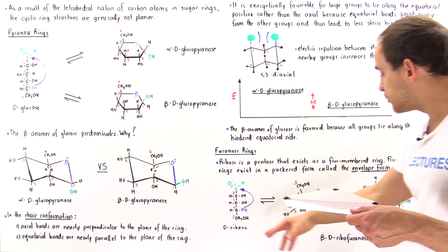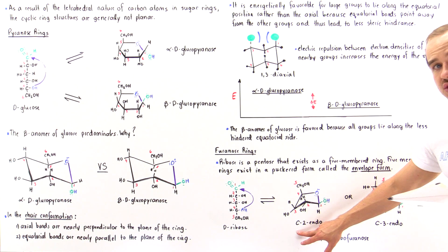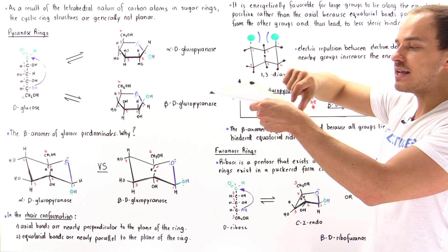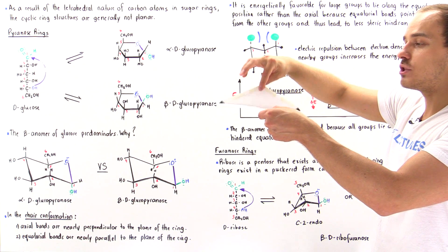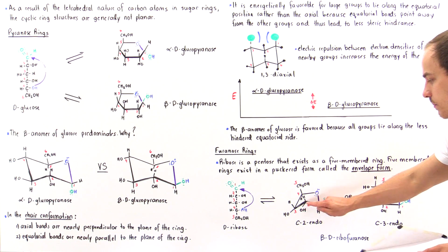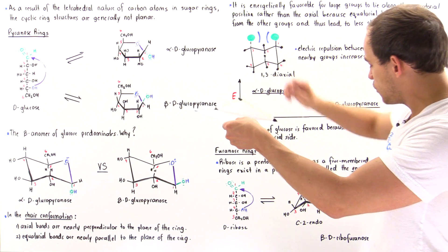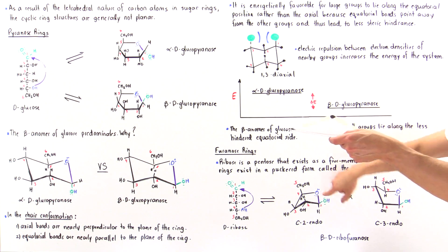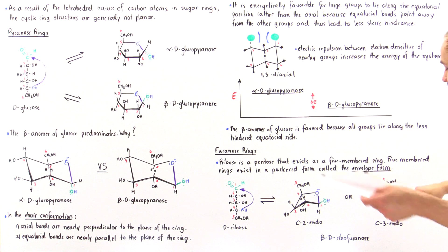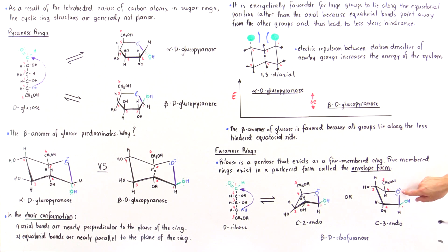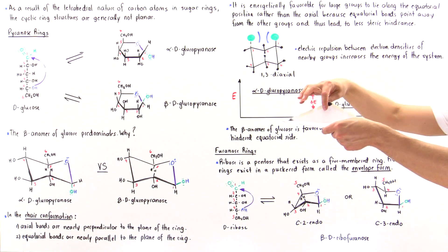There are two types of conformations: C2-endo and C3-endo. In the C2-endo, it is the second carbon that is puckered — carbon number two is out of the plane, while carbon number one, three, four, and the oxygen all lie along the same plane. In the C3-endo conformation, the third carbon is puckered — carbon number one, two, four, and the oxygen all lie along the same plane, and carbon number three is the one that is puckered.